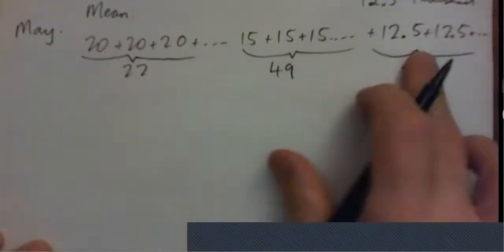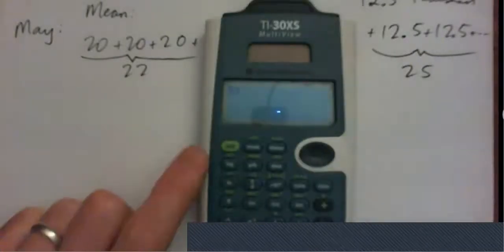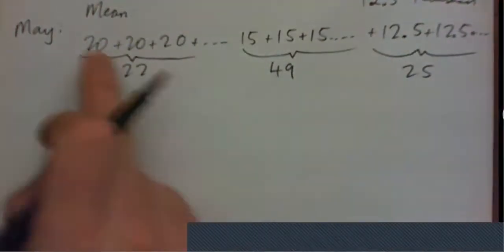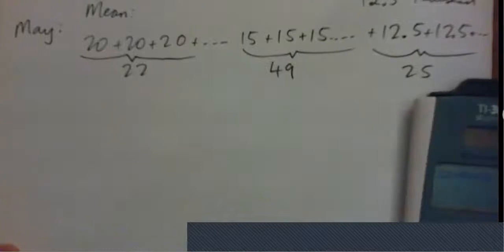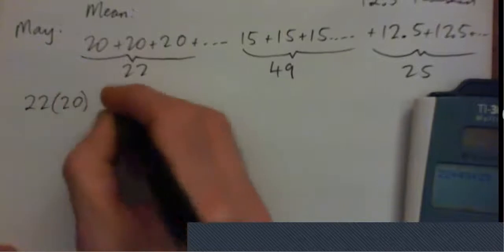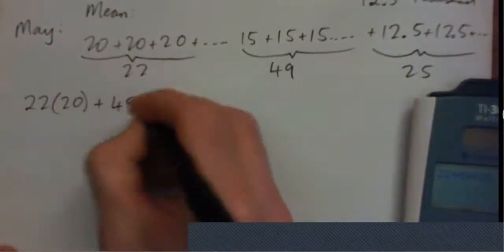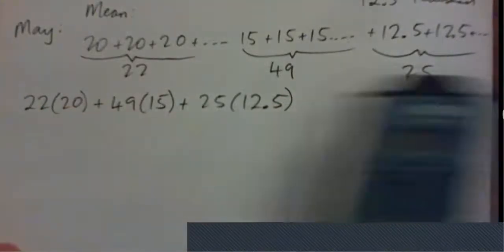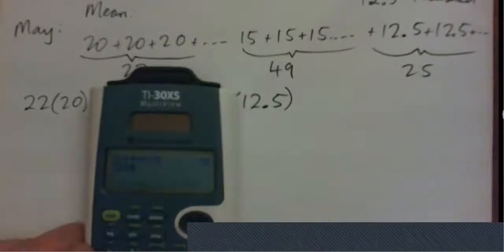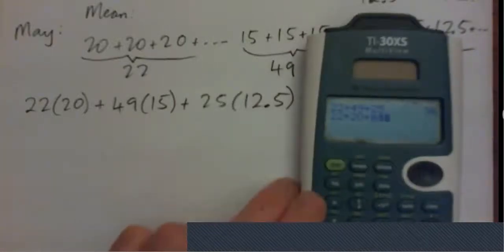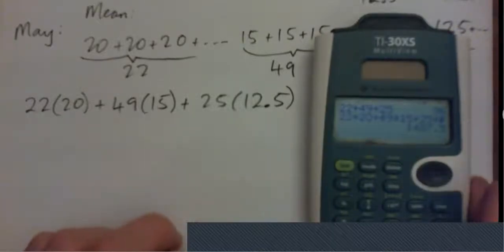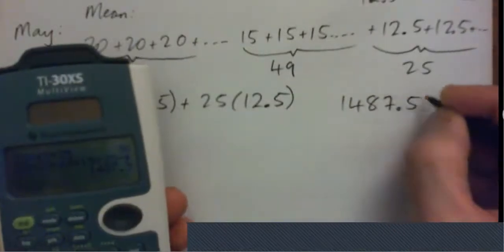Instead of adding them all up and dividing by the total — the total is 22 + 49 + 25, which is 96 cars — we can say: 22 cars worth $20,000 plus 49 cars worth $15,000 plus 25 cars worth $12,500. So 22 × 20 + 49 × 15 + 25 × 12.5 equals 1,487.5 (in thousands).